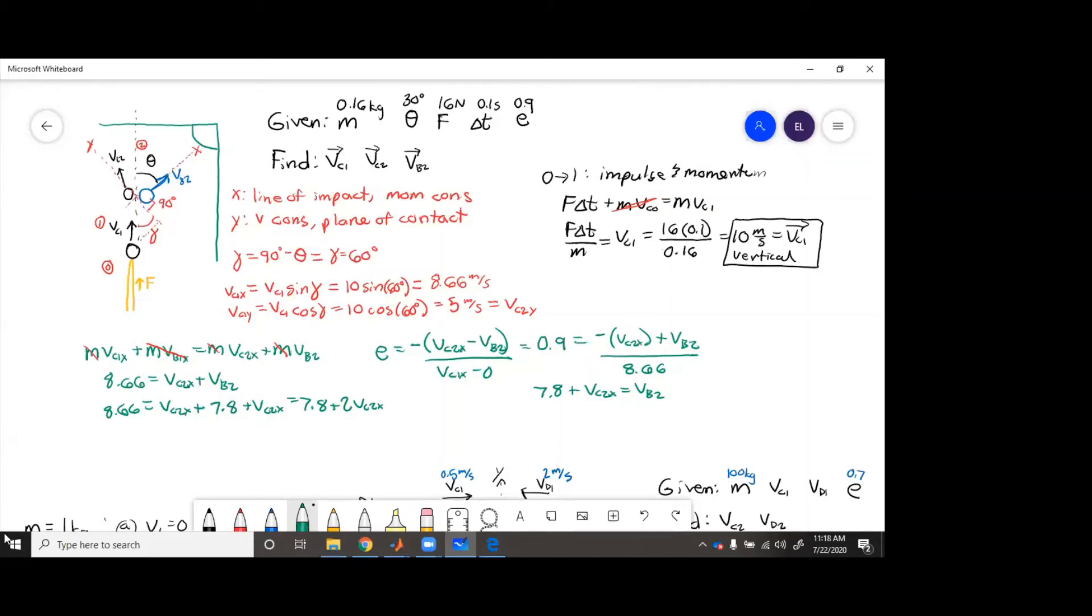So this equals 7.8 plus vc2x. And then, so this comes out to be 0.433 equals vc2x.